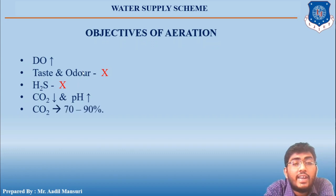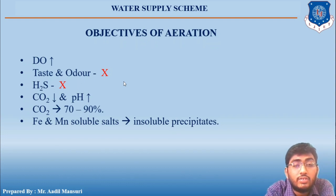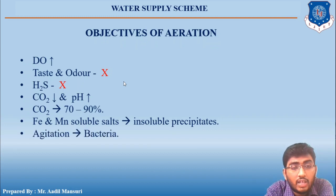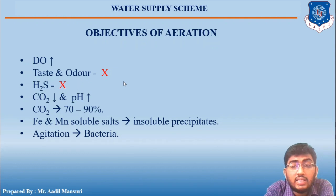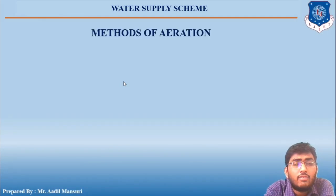Through the aeration process, carbon dioxide is removed up to 70 to 90 percent. Aeration is also responsible for converting soluble salts of iron and manganese into insoluble precipitates, which are then removed from the water. Additionally, constant agitation of water during aeration may kill bacteria to a certain extent.